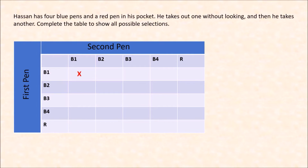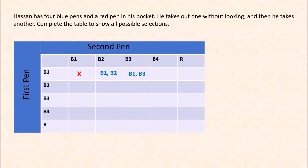We put an X on the cell where the same pen is drawn twice — that outcome is not possible. If he draws B1 first and then B2, we name it B1, B2. If the first draw is B1 and then B3, we have B1, B3. It could also be B1 and B4, giving B1, B4. Or he could select B1 and the red pen, so we call it B1, R.